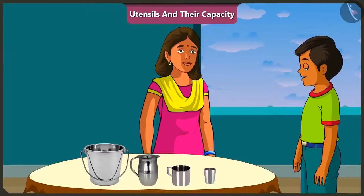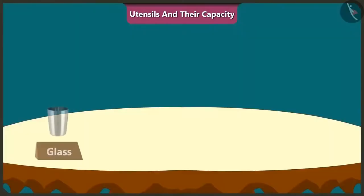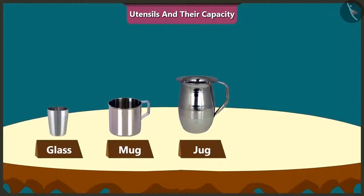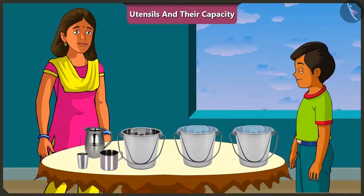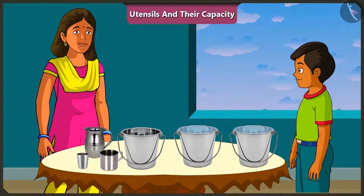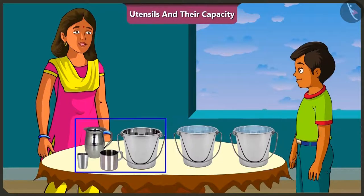So, which vessels and their capacities are we going to find today? Mishtu, today we will find the capacity of this glass, mug, jug and this bucket. Mommy, what are these two buckets of water for? Mishtu, we will use this water to find the capacity of all these vessels.